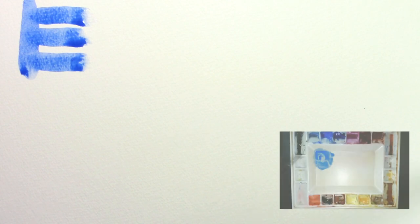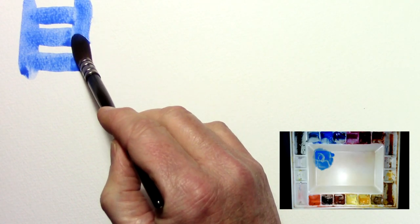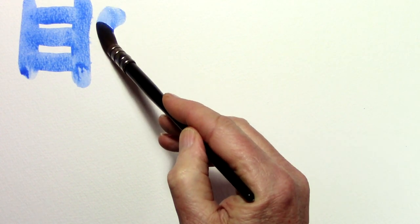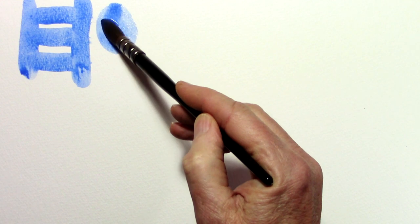Wet on dry creates a nice clear sharp edged brush stroke. So anything in your painting that requires you to create solid forms or draw attention, then use a wet on dry brush stroke to create a hard edge.